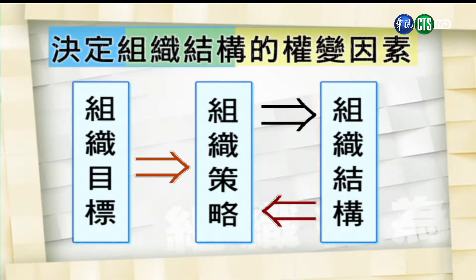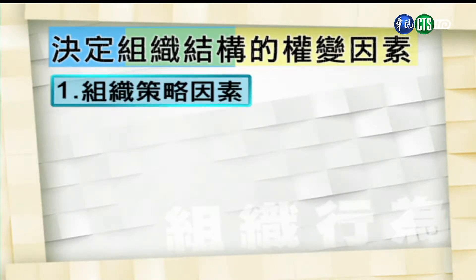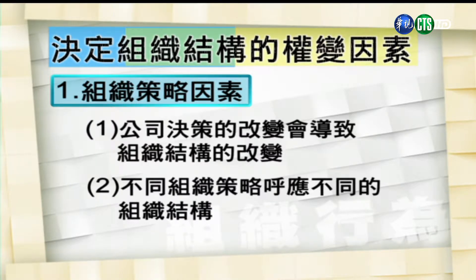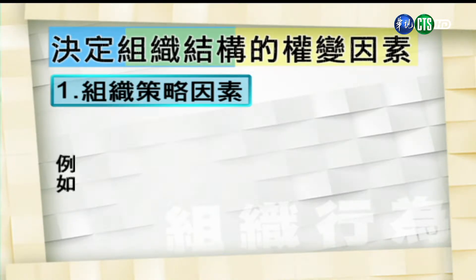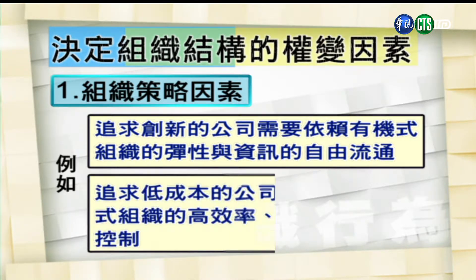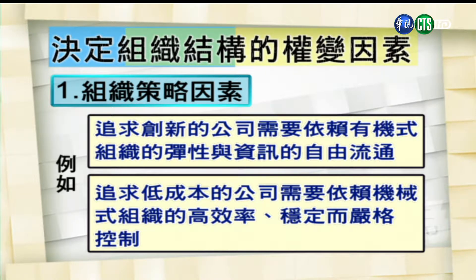根据美国大公司的案例显示，公司决策改变会导致组织结构的改变。研究也显示，不同的组织策略必须对应不同的组织结构。例如，一个追求创新的公司可能需要依赖有机式组织的弹性与资讯自由流通；而追求低成本的公司，可能需要依赖机械式组织的高效率、稳定以及严格的控制。